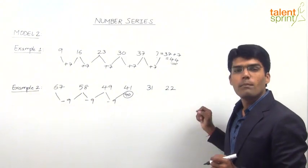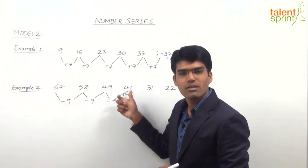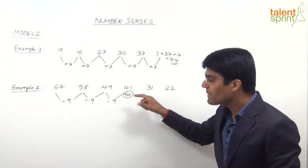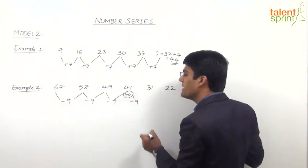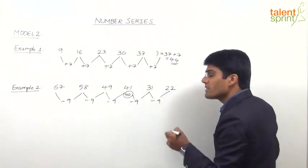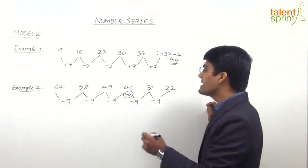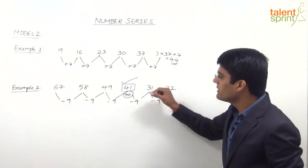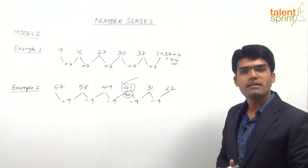Assuming minus 9 is the pattern, let us check if 31 and 22 are correct with respect to 40. If we take 40 as the correct number in place of 41, then 40 minus 9 equals 31, and 31 minus 9 equals 22. So the difference between two consecutive terms is always minus 9, except in the case of 41. Therefore, 41 is the wrong number — we should have 40 there instead.